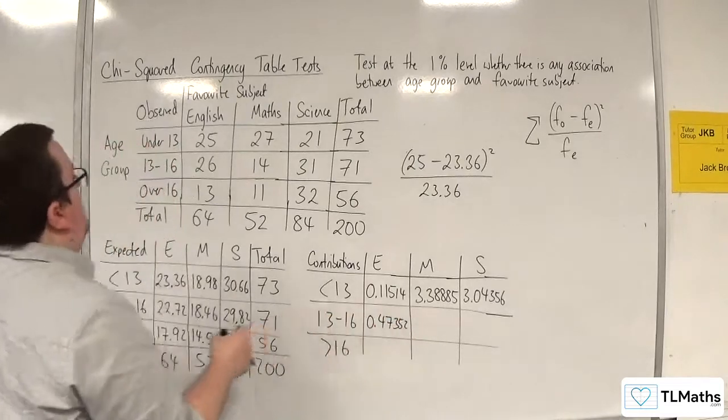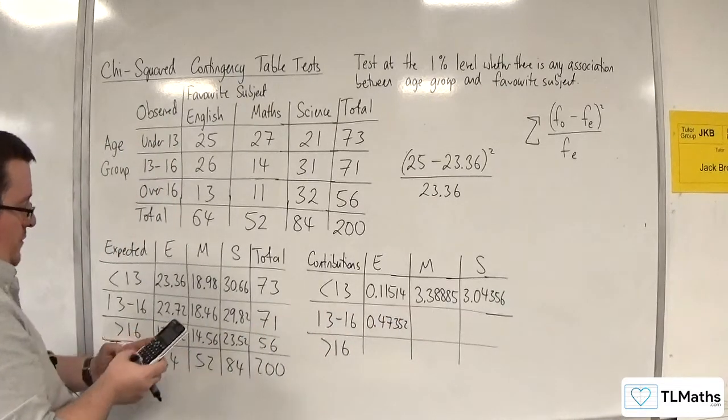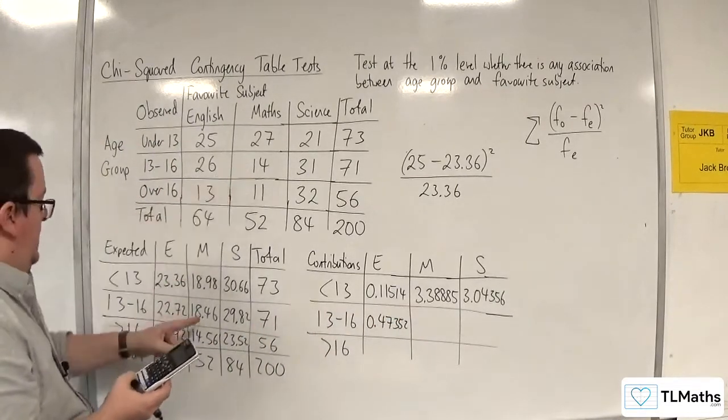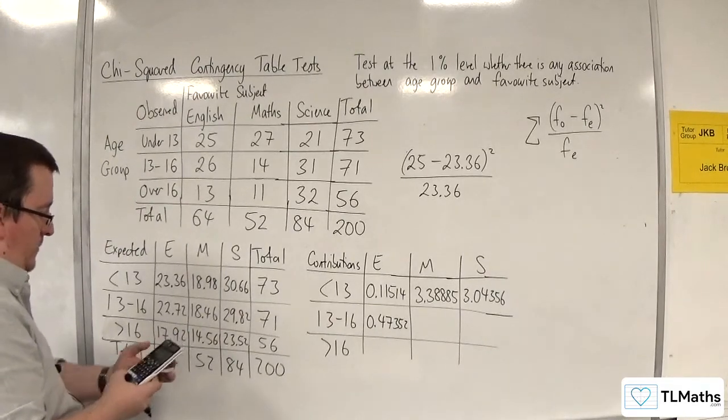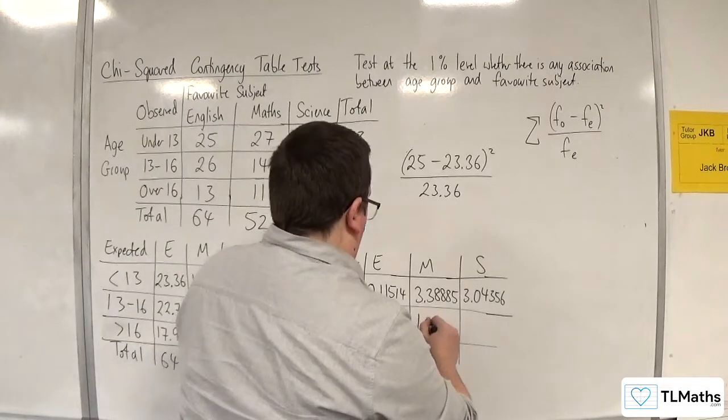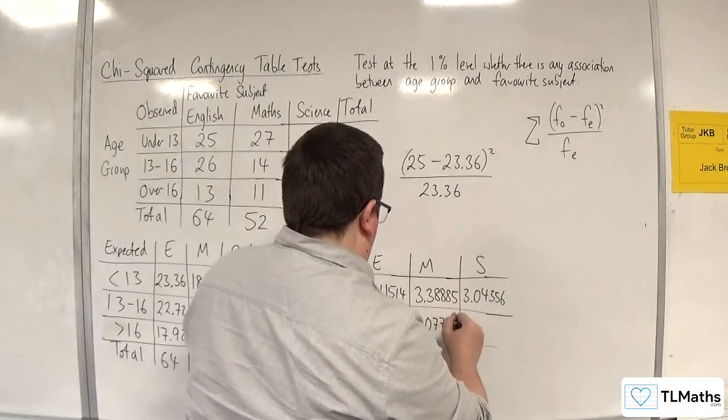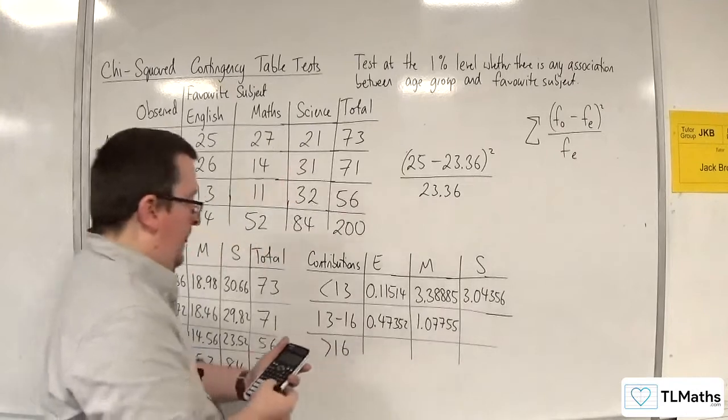This one next then. So we've got 14 take away 18.46, squared, divided by 18.46, 1.07755.